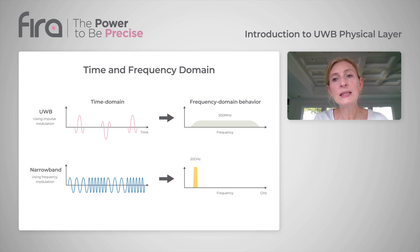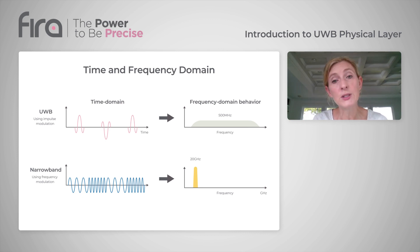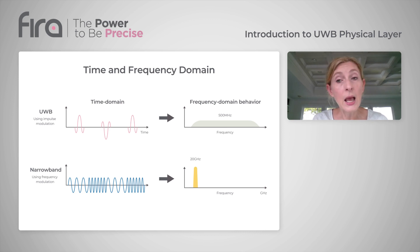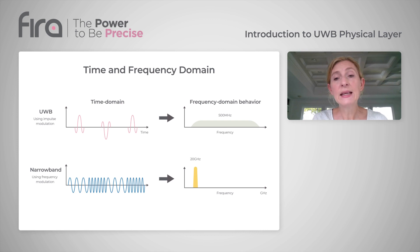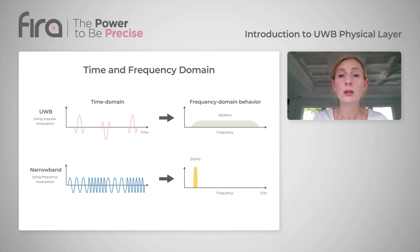UWB signal can be designed to look like imperceptible random noise to conventional narrowband receivers. And because UWB operates at low emission limits — for example, the FCC mandates a maximum power spectral density of minus 41.3 dBm per megahertz, which is an order of magnitude lower than typical short-range radio such as Bluetooth — it allows UWB technology to coexist with existing communications technology without causing interference.